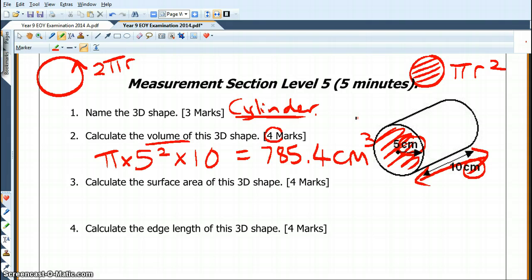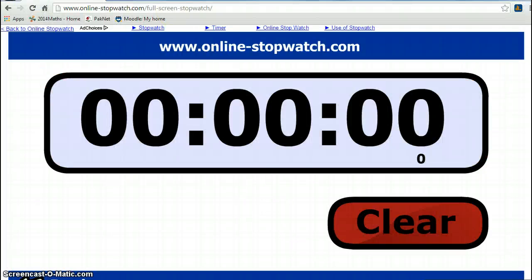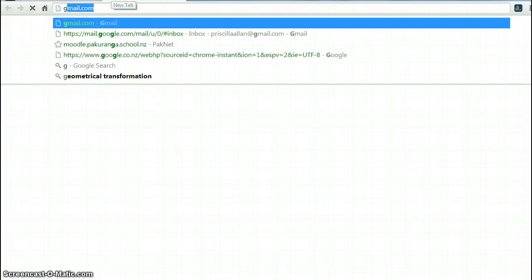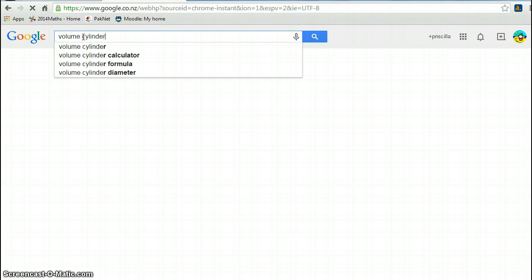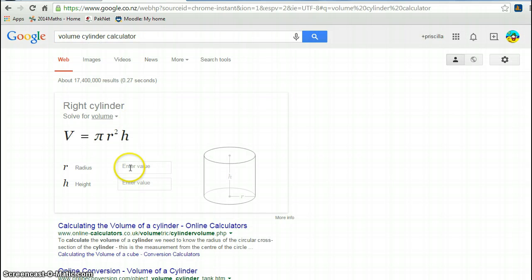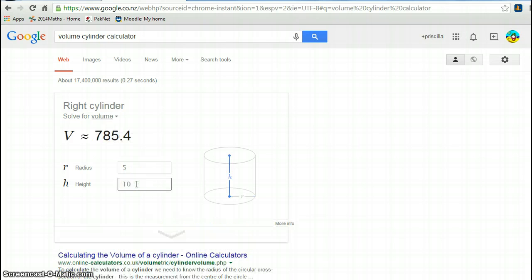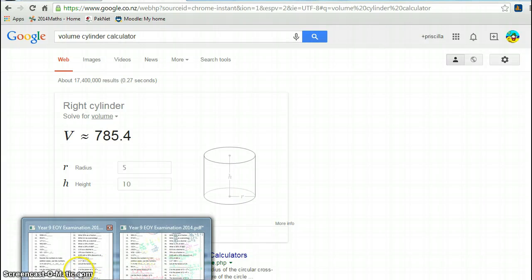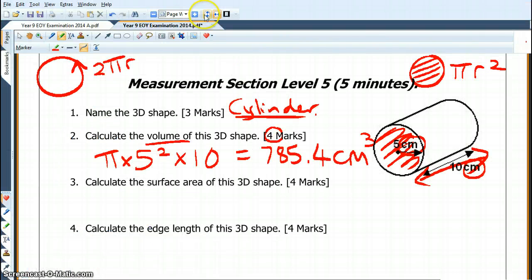Now when you're practicing this on your own, you need to check your answers correct. How would you do that? You would go to Google and you would go volume cylinder calculator, and Google will provide. So it was a 5 and it was a 10, and so we've got 785.4. And you can be happy that you didn't muck up.